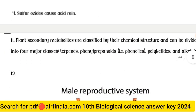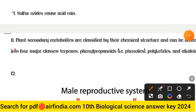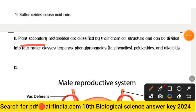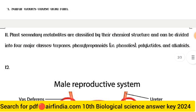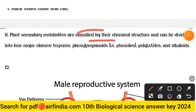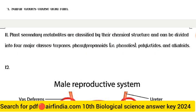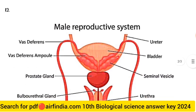Question 11 answer: Plant secondary metabolites are classified by their chemical structure and can be divided into four major classes: terpenoids, phenylpropanoids, phenolics, polyketides, and alkaloids.